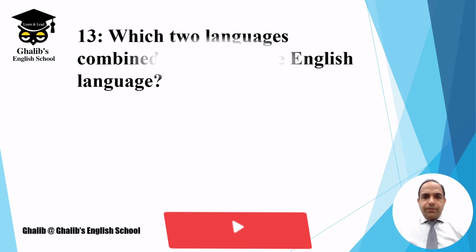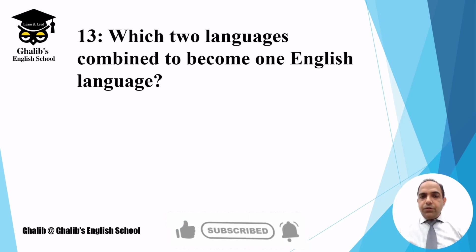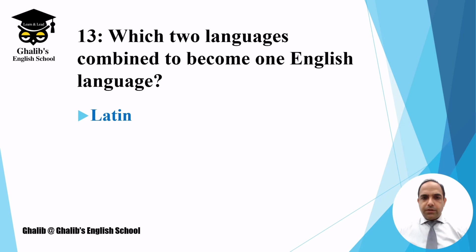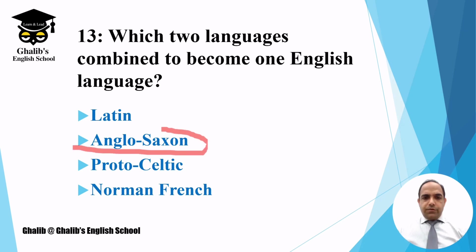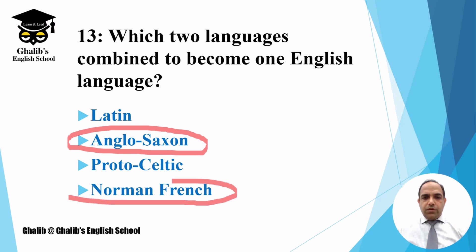Question number thirteen: which two languages combined to become the English language? In simple words, which two languages were the basis of the English language? We need to choose two options. The answers are Anglo-Saxon and Norman French — gradually these two languages combined together to become the English language.